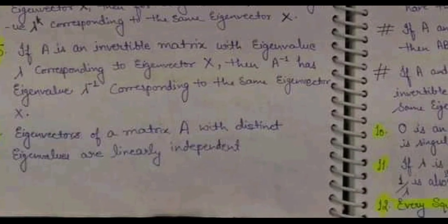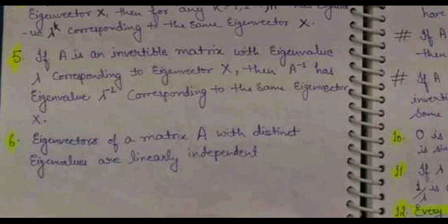Knowing these properties allows you to directly write the answer rather than putting in extra effort to find the eigenvector of the new matrix. Next, if A is an invertible matrix and its eigenvalue is lambda with corresponding eigenvector x, then A-inverse has eigenvalue lambda-inverse corresponding to the same eigenvector x. The eigenvector remains the same as for A.